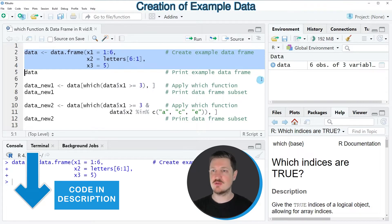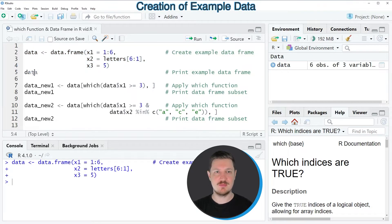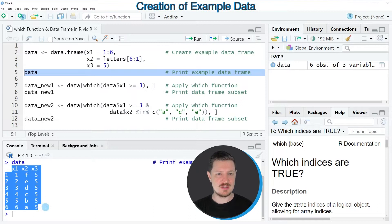So after running these lines of code, a new data frame object is appearing at the top right which is called data, and we can print this data frame to the bottom in the RStudio console by running line five of the code. Then you can see that our data frame contains six rows and the three columns x1, x2, and x3.